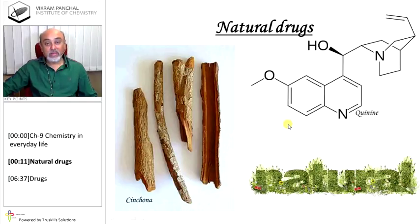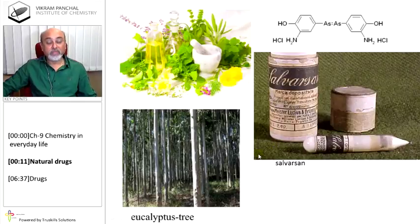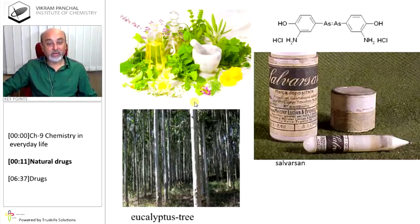In malaria, we currently use quinine, which is a very effective drug and a synthetic compound. But in earlier days, it was obtained from the bark of the cinchona tree, which was used in treatment of malaria. Eucalyptus trees give us an important compound, methyl salicylate, which is used as a pain reliever. Salvarsan is also used nowadays.